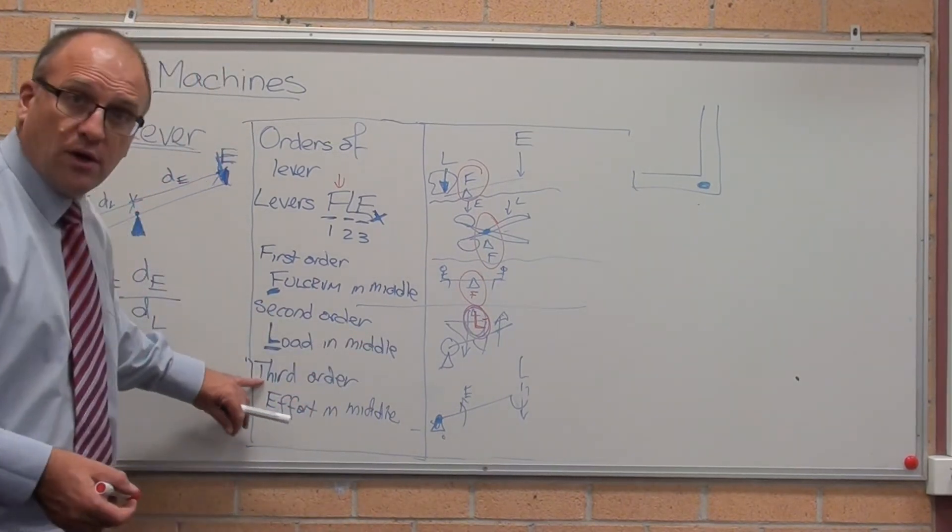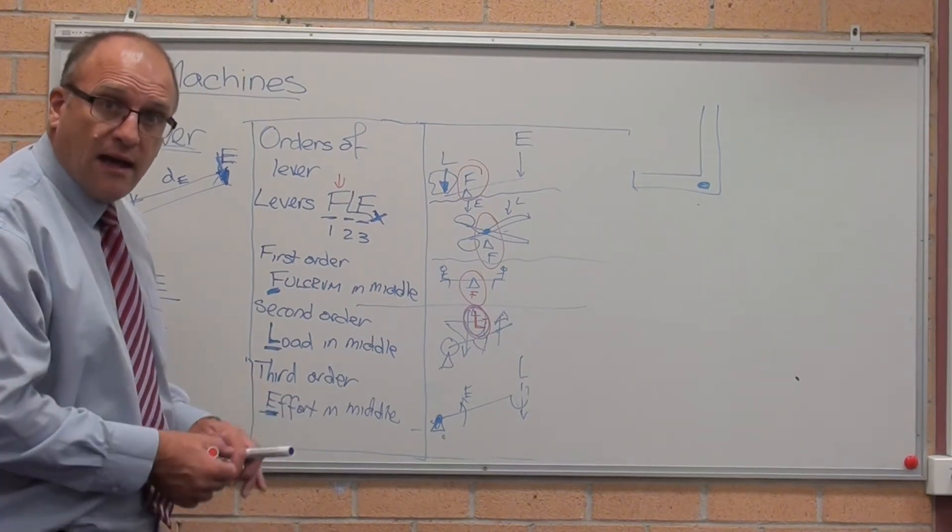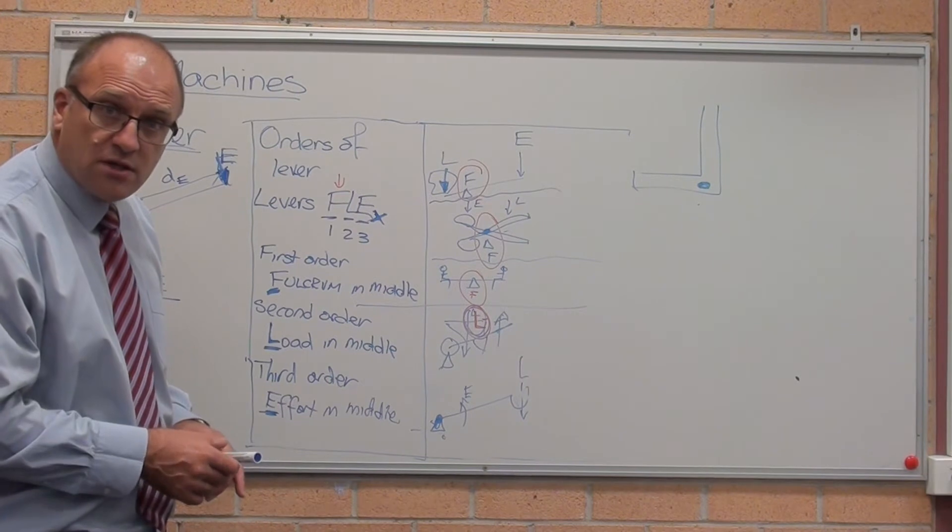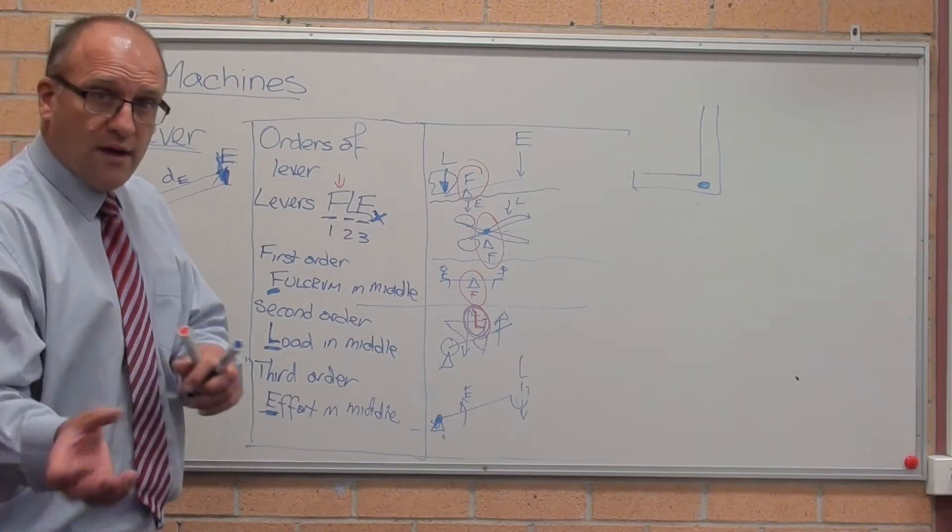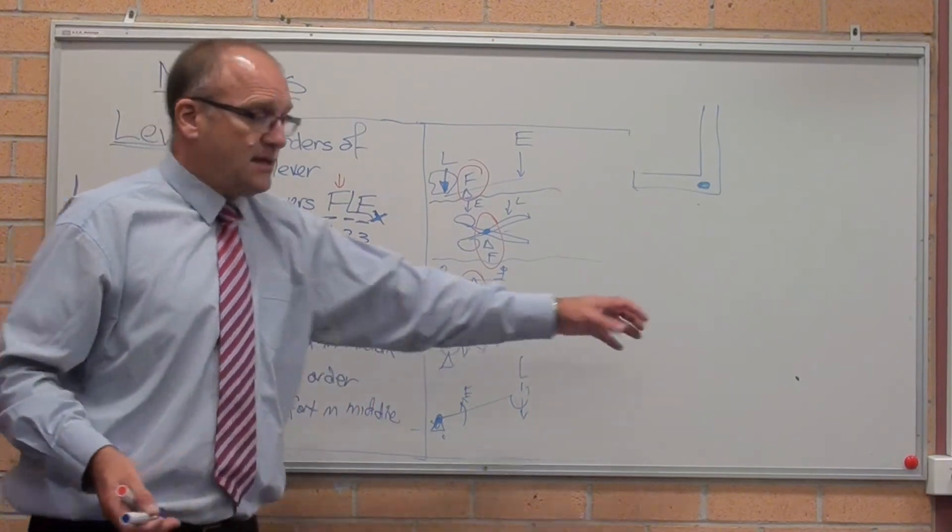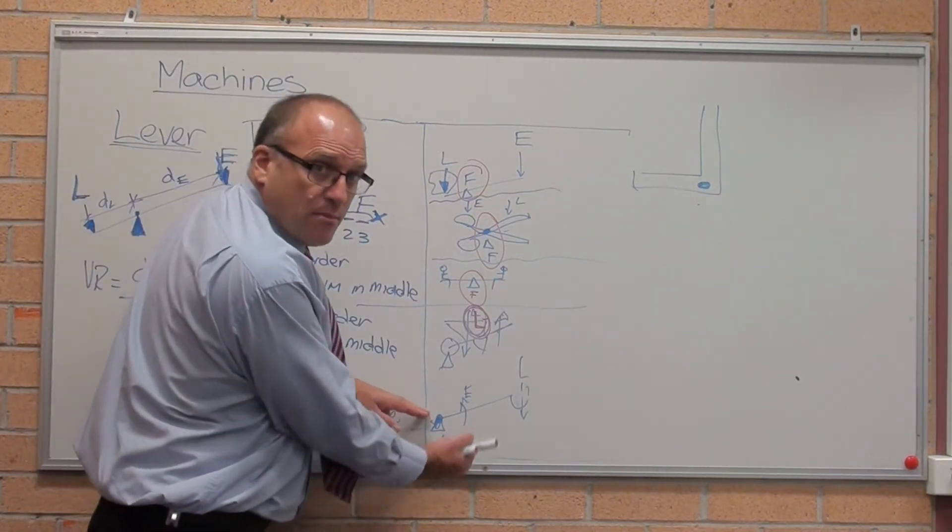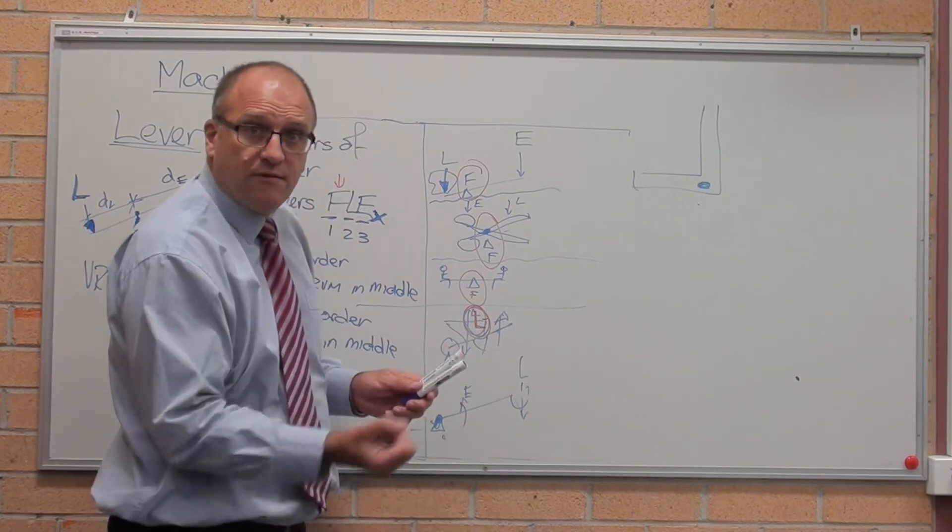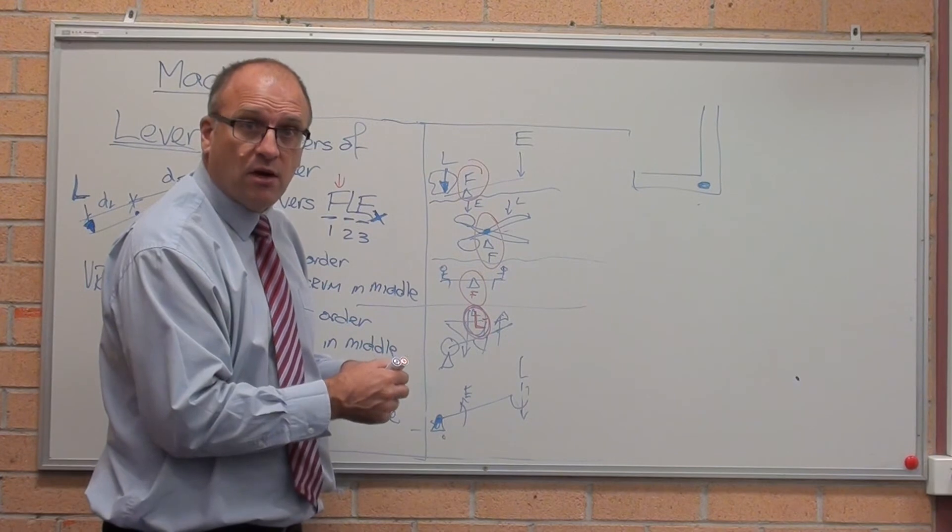The third order levers magnify velocity at the expense of higher effort. Classic case is the catapult, where the load's all the way out here, the pivot points over here. The effort, you need a massive effort to lift up that load, but the trade-off is incredibly high velocities.